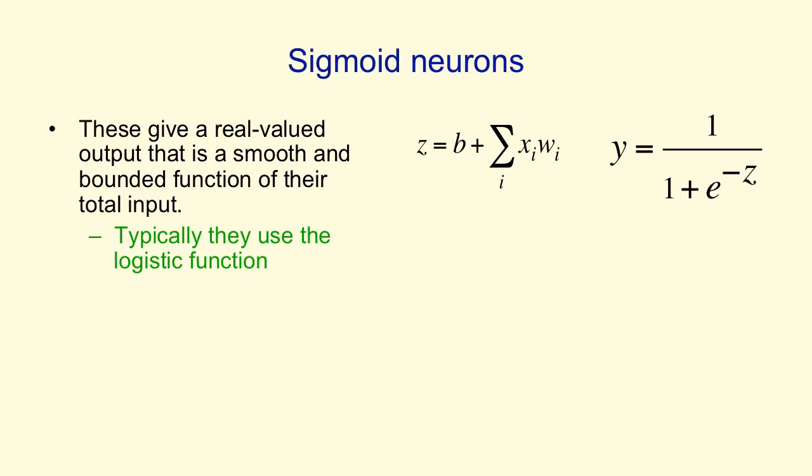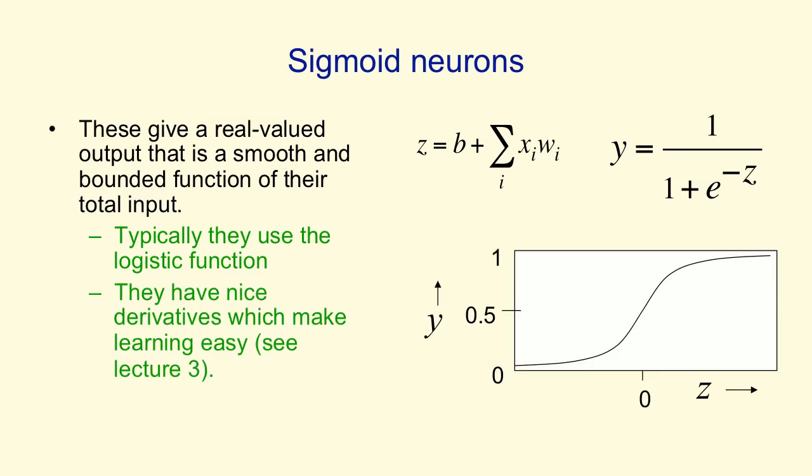If you think about that, if the total input's big and positive, e to the minus a big positive number is 0, and so the output will be 1. If the total input's big and negative, e to the minus a big negative number is a large number, and so the output will be 0. So the input-output function looks like this.